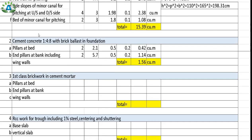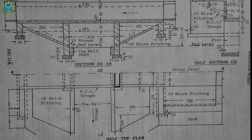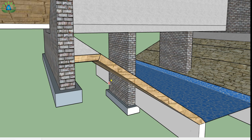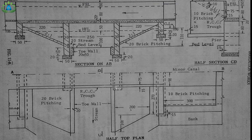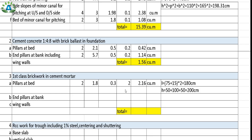For first-class brickwork in cement mortar: pillars at bed are 2 in number. The total length equals (75 + 15) × 2 = 180 centimeter = 1.8 meter. Width is 30 centimeter = 0.3 meter. Total height equals 100 + 50 + 50 = 200 centimeter = 2 meter. Quantity equals 2.16 cubic meter.